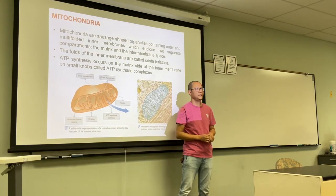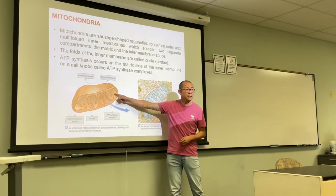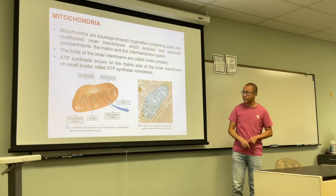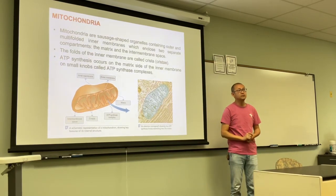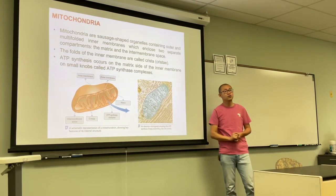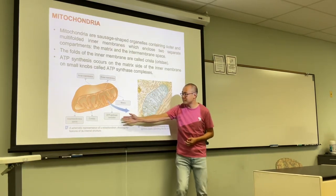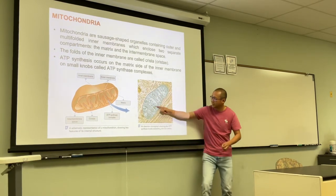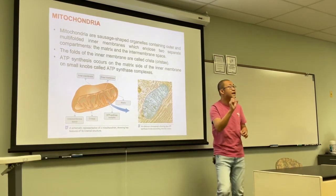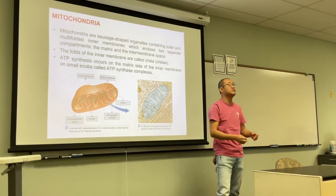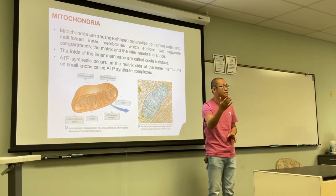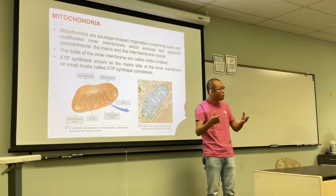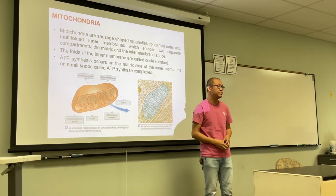Synthase means the enzyme that synthesizes ATP. The space inside the inner membrane is called the matrix of the mitochondria. Make sure you know every part: outer membrane, inner membrane, cristae, matrix, and intermembrane space — and that ATP synthase is located on the cristae. The reason for the folding is to increase surface area so more energy can be produced at the same time, just like the small intestine's villi increase surface area for nutrient absorption.